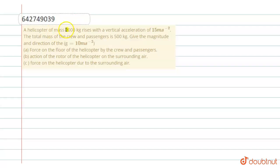Hello students, here is the question: a helicopter of mass 2000 kg rises with a vertical acceleration of 15 meter per second squared.